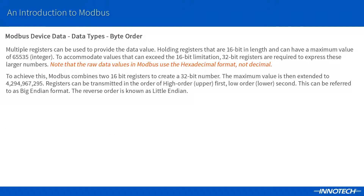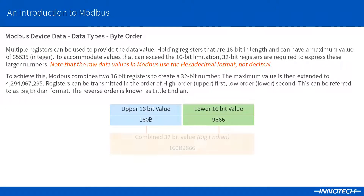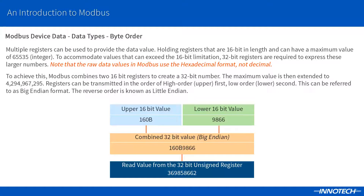For larger registers such as 32-bit, the device can combine two 16-bit registers to provide the 32-bit value. How these numbers are transmitted to the master depends on how they have been configured by the manufacturer. This is usually in the Big Endian format, meaning the upper 16-bit register is transmitted first, then the lower 16-bit register. The master then needs to combine these two register values to formulate the 32-bit value. Refer to the datasheet for this information as the reverse may be true, which is referred to as Little Endian.